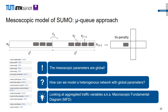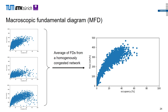Looking at SUMO's mesoscopic model — a time-headway-based queuing theory approach — an important issue is that its parameters are global. However, the urban network is heterogeneous: there are different road types with different capacities, speed limits, and numbers of lanes. We cannot model all these different road types with one parameter set. Considering these limitations, we came up with the idea of looking into aggregated traffic variables — the macroscopic fundamental diagram, or MFD — to help us converge.